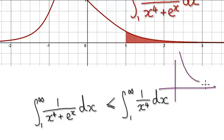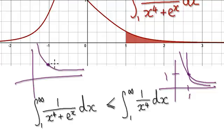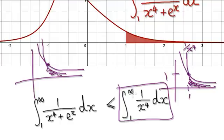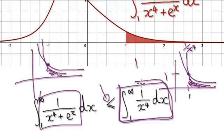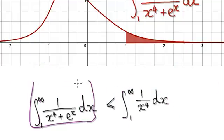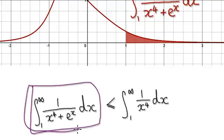1 over x looks like this, and 1 over x squared will look something like this — so 1 over x to the power 4 is going to be even steeper than 1 over x squared. The point is that if 1 over x squared converges, then 1 over x to the power 4 will definitely converge. So this thing here will converge. If this thing here has converged, and this is always smaller or equal to it, then this will have no choice but also to converge. So this thing here will converge.